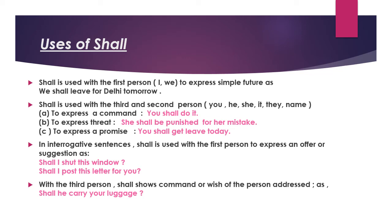In special conditions, 'shall' is used with second and third person subjects — you, he, she, it, name, they — to express command: 'You shall do it.' To express threat: 'She shall be punished for her mistakes.' To show a promise: 'You shall get leave today.' In interrogative sentences, 'shall' is used with the first person to express an offer or suggestion — 'Shall I shut this window?' or 'Shall I post this letter for you?' With the third person, 'shall' shows command or wish — 'Shall he carry your luggage?'